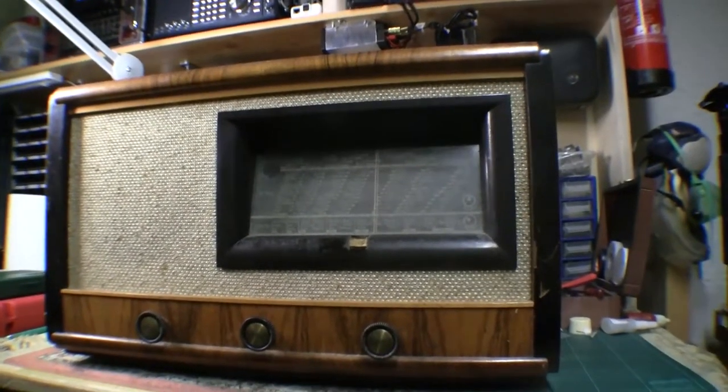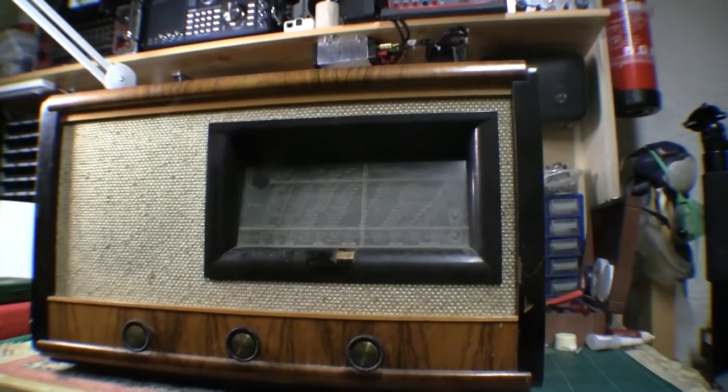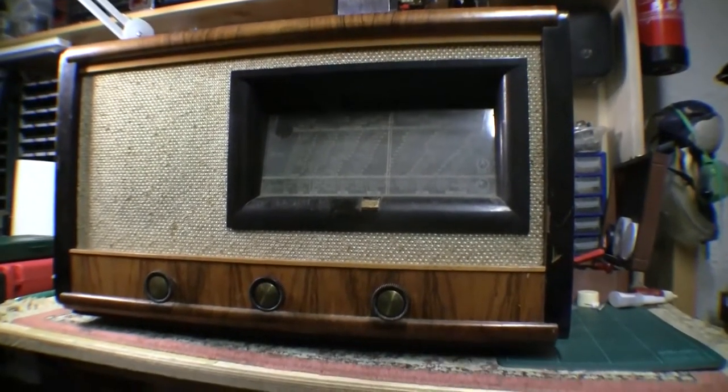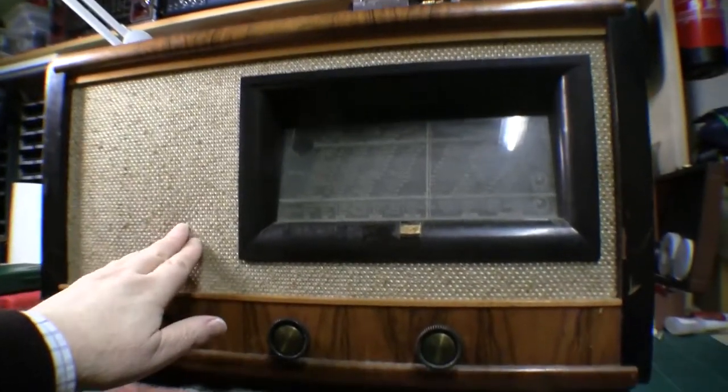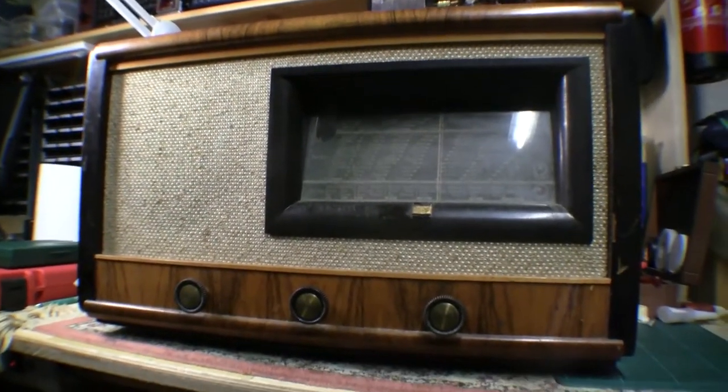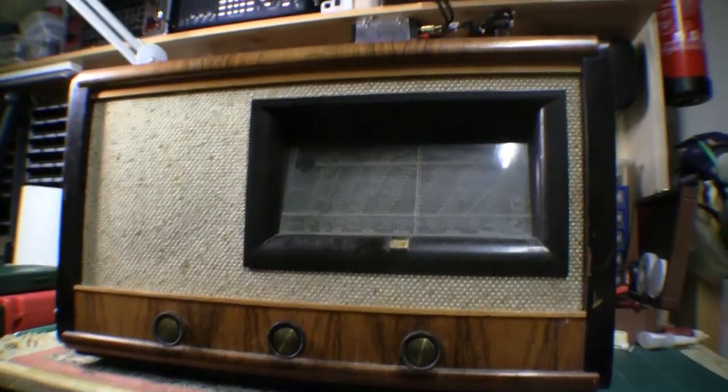So here we go. It's quite big and not too heavy though, so I don't suppose the chassis inside is a monster or anything like that. Grill cloth is in good condition, no heavy staining or anything like that. Here's the only sign of what looks like a make or mark, this Mediator.